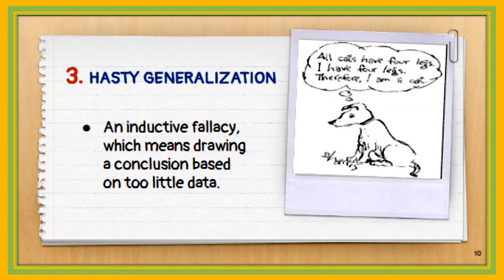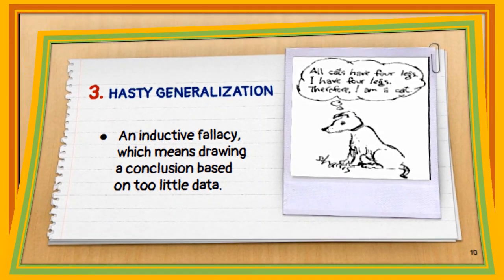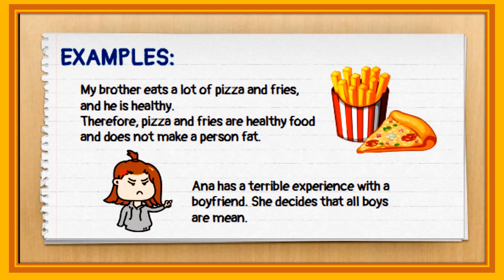The third fallacy is the hasty generalization — a form of inductive fallacy which means drawing a conclusion based on too little data. For example, my brother eats a lot of pizza and fries and he is healthy, therefore pizza and fries are healthy and do not make a person fat. Also, Anna had a terrible experience with a boyfriend, and thus concluded that all boys are mean.